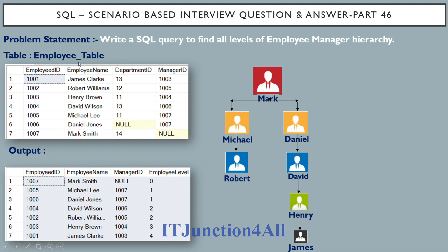For this problem we have been given a table called the employee table, which has columns employee ID, employee name, department ID, and manager ID. The expected output contains employee ID, employee name, manager ID, and one extra column called employee level that we have to derive. If you see row number one, employee Mark has a manager ID of null, meaning Mark is not reporting to anyone, so his employee level is zero.